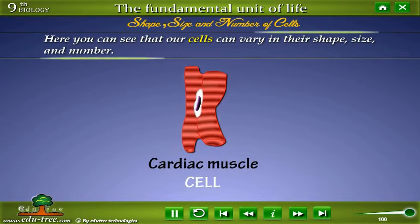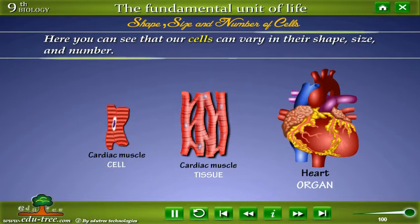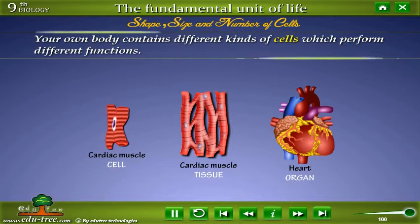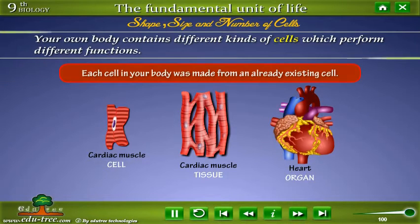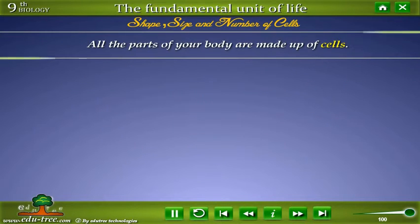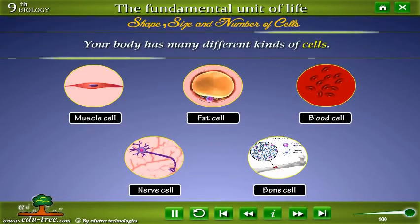Our cells can vary in their shape, size, and number. Your own body contains different kinds of cells, which perform different functions. Each cell in your body was made from an already existing cell. All the parts of your body are made up of cells, and your body has many different kinds of cells.